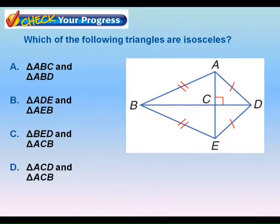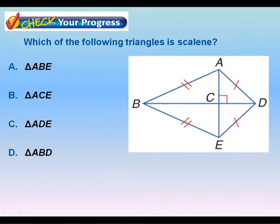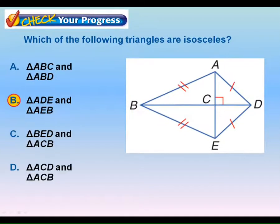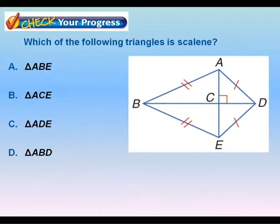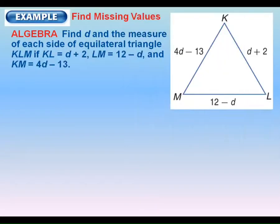This question is asking which of these triangles are isosceles — two sides congruent — and which are scalene. Triangle ABD would be scalene — none of the sides are the same.